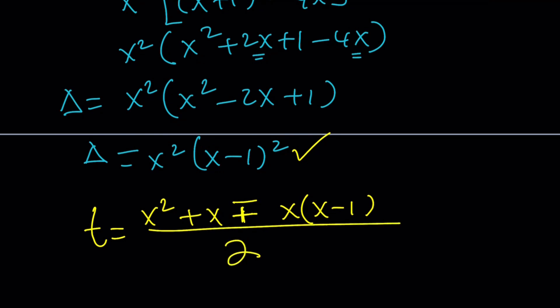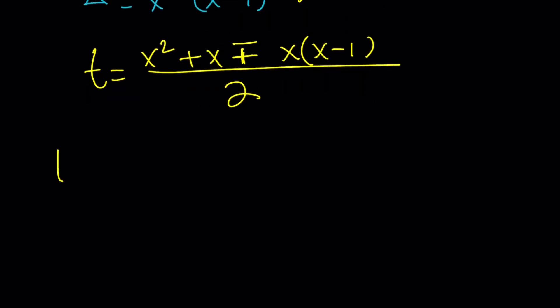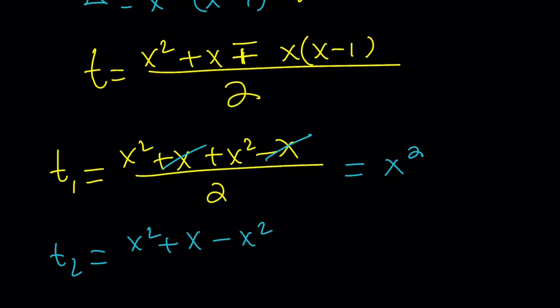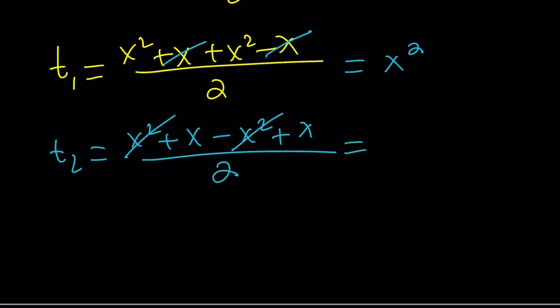At this point, we're going to split it up into two solutions. So t sub 1 is x squared plus x plus x squared minus x divided by 2. I just distributed the x. And here, x cancels out, leaving us with 2x squared divided by 2, which is x squared. So t sub 1 is x squared. Hold on to it because now we're going to find t sub 2. x squared plus x minus x squared minus minus x is going to become plus x. And then x squared cancels out. And we end up with x. So those are the solutions to the quadratic.